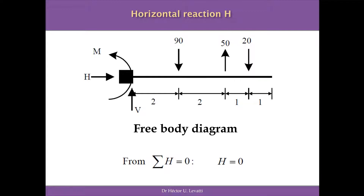In order to establish the value of the horizontal reaction H, we are going to use the equation of equilibrium that says the summation of forces in the horizontal direction equals zero. In this particular exercise, because there is no horizontal force, the horizontal reaction will be zero. Mathematically, the summation of forces in the horizontal direction is just H, and it has to be equal to zero. So the horizontal reaction is equal to zero.